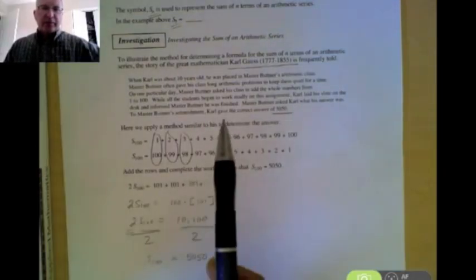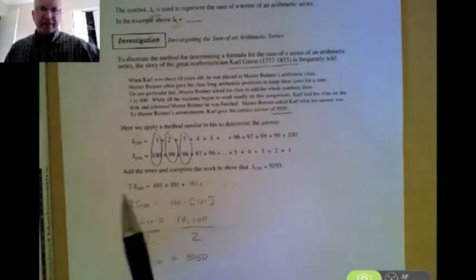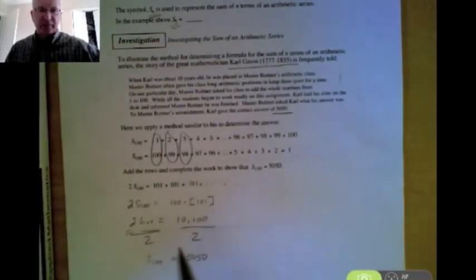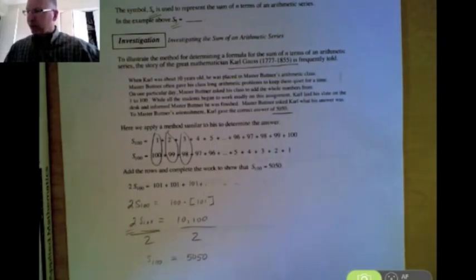So Carl was pretty good with numbers and he could do most of this in his head. And instead of going one plus two is three, three plus three is six, six plus four is ten, he was able to quickly add all those numbers together and get a solution quite quickly.